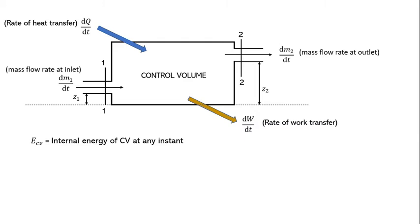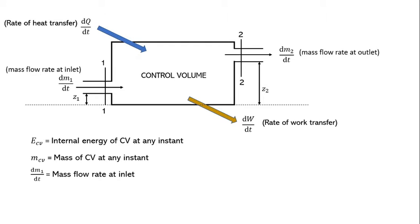Let E_CV be the internal energy of the control volume at any instant and m_CV be the mass of the control volume. With the inflow of the stream, there will be some energy associated with the stream coming into the control volume, and with the outflow of the stream, some energy will go out with it.